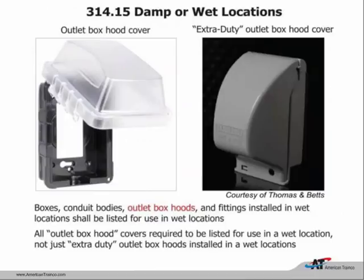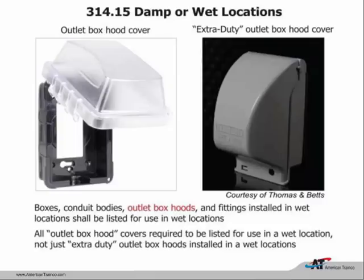Still in Chapter 3, outdoor covers and canopies: the 2014 National Electrical Code has basically discontinued the bubble-style cover. All outdoor covers now must be extra duty and listed for a wet location. Extra duty listing means a heavy metal cover—much better than the old bubble cover. Bubble covers would break, homeowners and building owners wouldn't replace them, and receptacles would be exposed to weather. The extra duty heavy cover requirement applies to every installation—residential, commercial, and industrial.